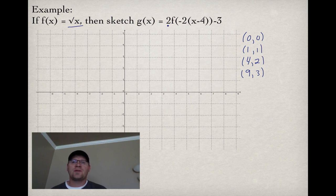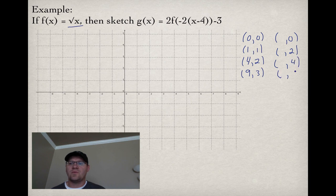Remember when we're doing these things that we always do the stretches first. This 2 out in front means we multiply all the y values by 2. So this first point stays as 0, next one becomes 2, next one becomes 4, last one becomes 6. The negative 2 inside the brackets means all the x values change by a factor of negative half. We still have 0 here, this becomes negative half, this becomes negative 2, and this becomes negative 4 and a half.